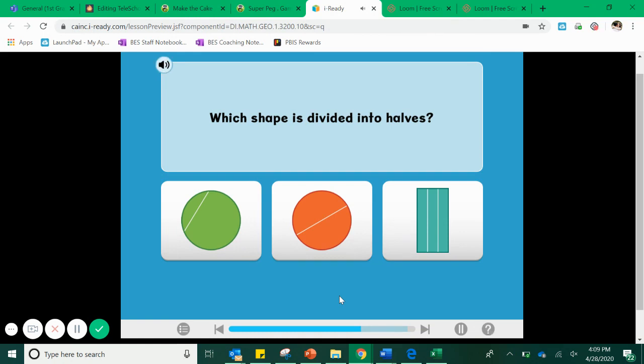Which shape is divided into halves? Well I know that halves are two equal parts so I can automatically get rid of this rectangle on the end because I have one, two, three equal parts here so it can't be the rectangle. Let's take a look at the two circles. The green circle is divided into two parts but those are not equal. One is much smaller than the other. The orange circle is divided into two parts and those are equal. If I folded that circle in half each side would be exactly the same. So this orange circle is divided into halves.